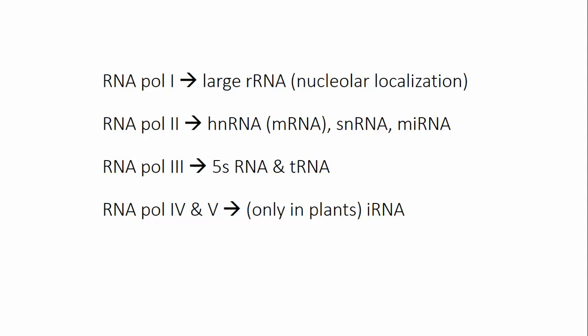RNA Polymerase II transcribes heterogeneous nuclear RNA, which includes messenger RNA. RNA Polymerase III transcribes 5S rRNA and small RNAs such as tRNA, and controls the expression of those RNAs.